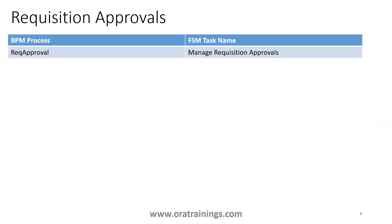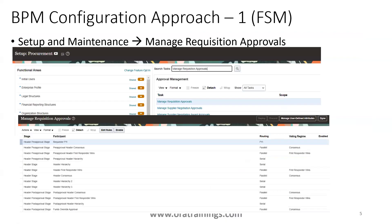There are two options for modifying or customizing the workflow. The first option is 'Manage Requisition Approval,' which is via the FSM task. The second option is using the BPM process called 'Requisition Approval.' Let us look at the first option, Manage Requisition Approval.